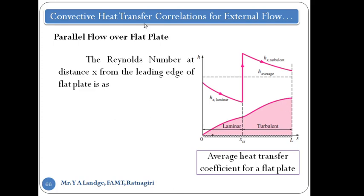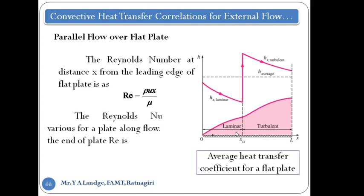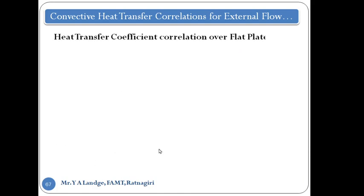We take the Reynolds number at a distance x from the leading edge of the plate. The Reynolds number equals rho times U times x divided by mu. In internal flow we use D, but here we use x — the distance the fluid has traveled. The Reynolds number varies along the plate. At the end of the plate, at distance L, we can write: Reynolds number equals rho times U times L divided by mu.